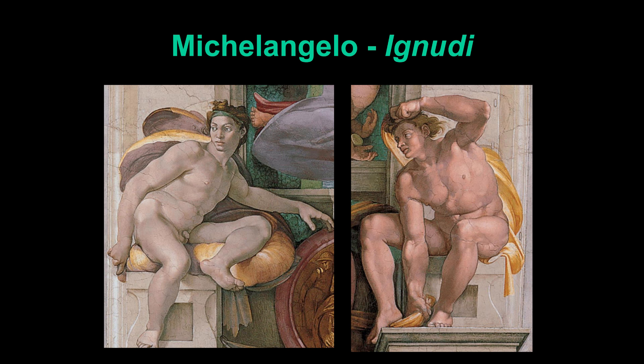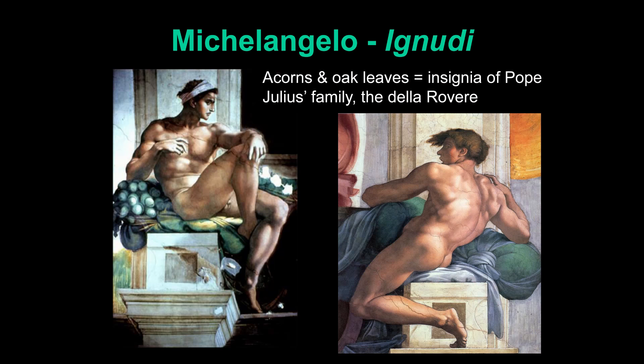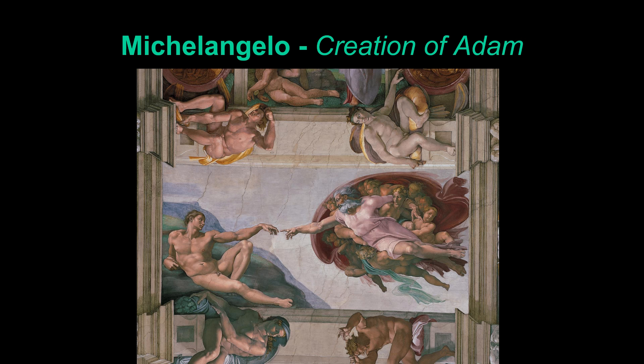Here are two more of these ignudi — and two more — with more acorns visible. One figure on the left shows some white spots from before the cleaning, where the plaster has flaked off. When they restored it they filled in the gaps. The image on the right is another nude figure after restoration — there are still cracks, but it has been cleaned.